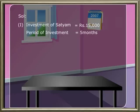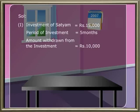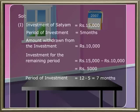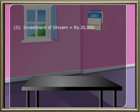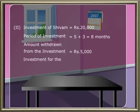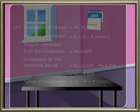Solution: Investment of Satyam is rupees 15,000 for the first 5 months. He withdrew rupees 10,000, so the remaining investment is 15,000 minus 10,000 which is rupees 5,000 for the remaining 7 months. Investment of Shivam is rupees 20,000 for the first 8 months. He withdrew rupees 5,000, so the remaining investment is rupees 15,000 for the remaining 4 months.